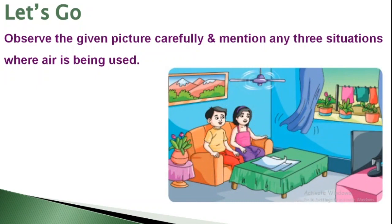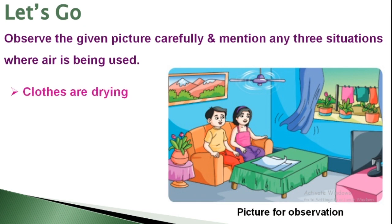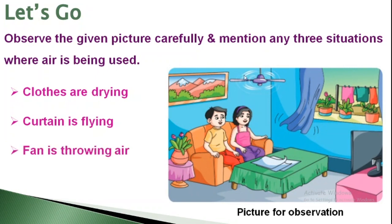Let's observe the given picture carefully and mention any three situations where air is being used. Yes — clothes are drying. Can you see these clothes are drying with the help of air? Curtains are flying — can you see movement in the curtain? They are flying due to air. A fan is throwing air, due to which papers are moving. So we have three situations: clothes are drying, curtain is flying, and fan is throwing air causing papers to move.